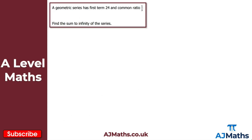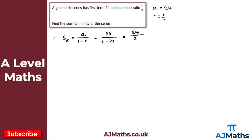Question 1: we've got a geometric series which has first term 24 and common ratio of a third, so A equals 24 and R equals a third. We're asked to find the sum to infinity. Remember, the sum to infinity is A over 1 minus R, and we can use this because R is between minus 1 and 1. Substituting gives 24 over 1 minus a third, which is 24 over 2 thirds. Putting this into the calculator gives us 36. That's the sum to infinity for that series.